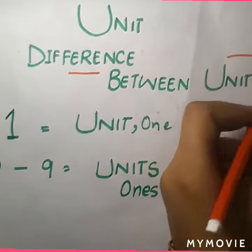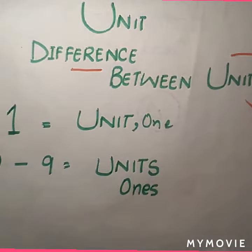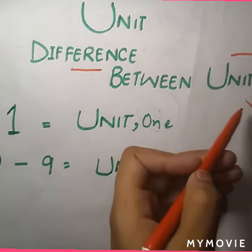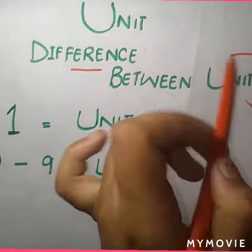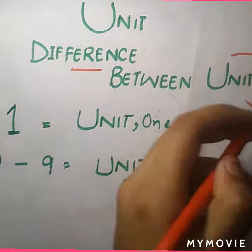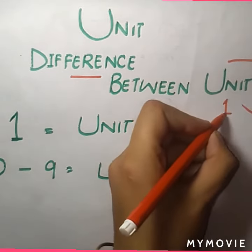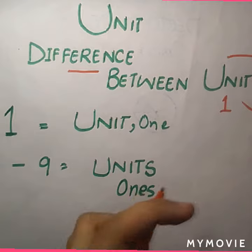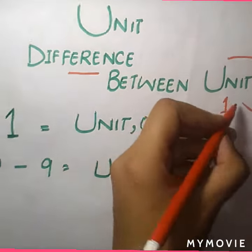First of all we have to know what is the unit - at least one thing from both we have to know, then we will understand it. Unit is a value of one, like unit circle, unit identity matrix, unit identity.